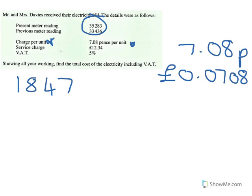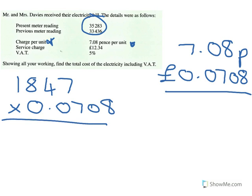Don't do any rounding — it looks funny and it's not the way we'd normally write money going to four decimal places, but you do not round. Every unit costs this amount of money, so we need to multiply these two things together: 1,847 × 0.0708. Do that in your calculator and you'll get 130.7676.